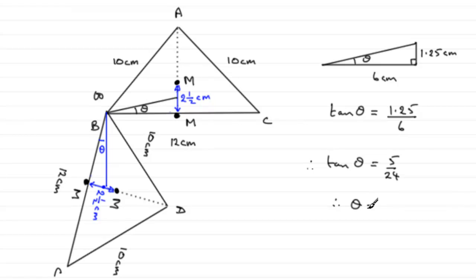To get theta, just inverse tan that value of 5 over 24. And you should find that you get 11.7682 and so on degrees. And if we round that to say one decimal place, it's going to be 11.8 degrees to one decimal place, 1dp.